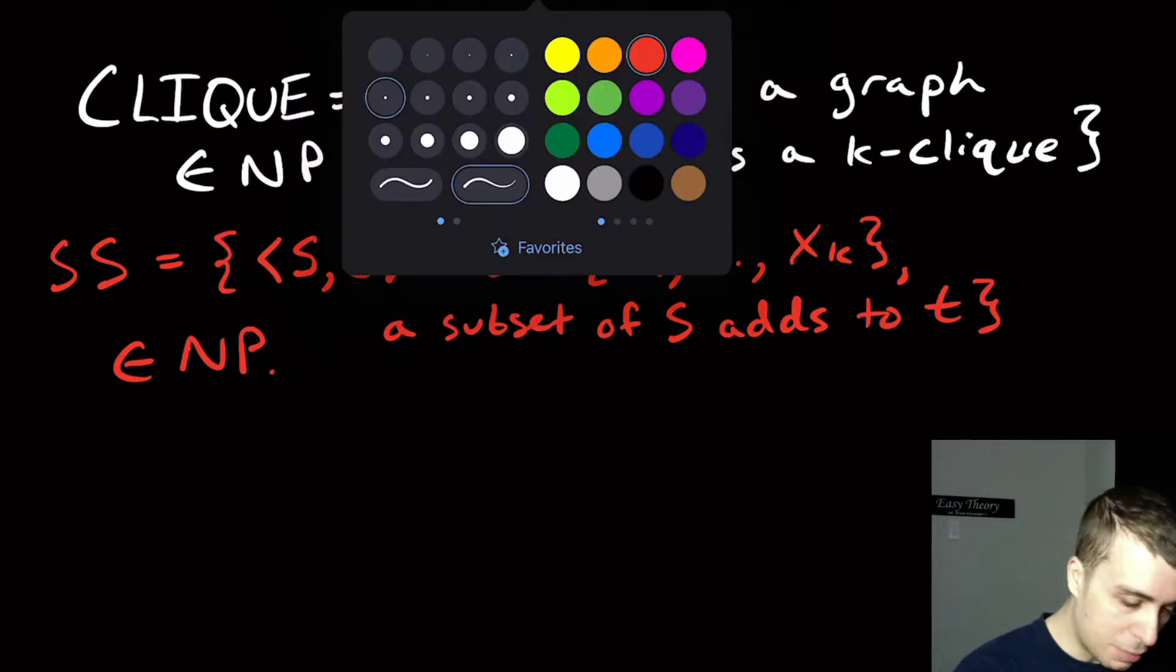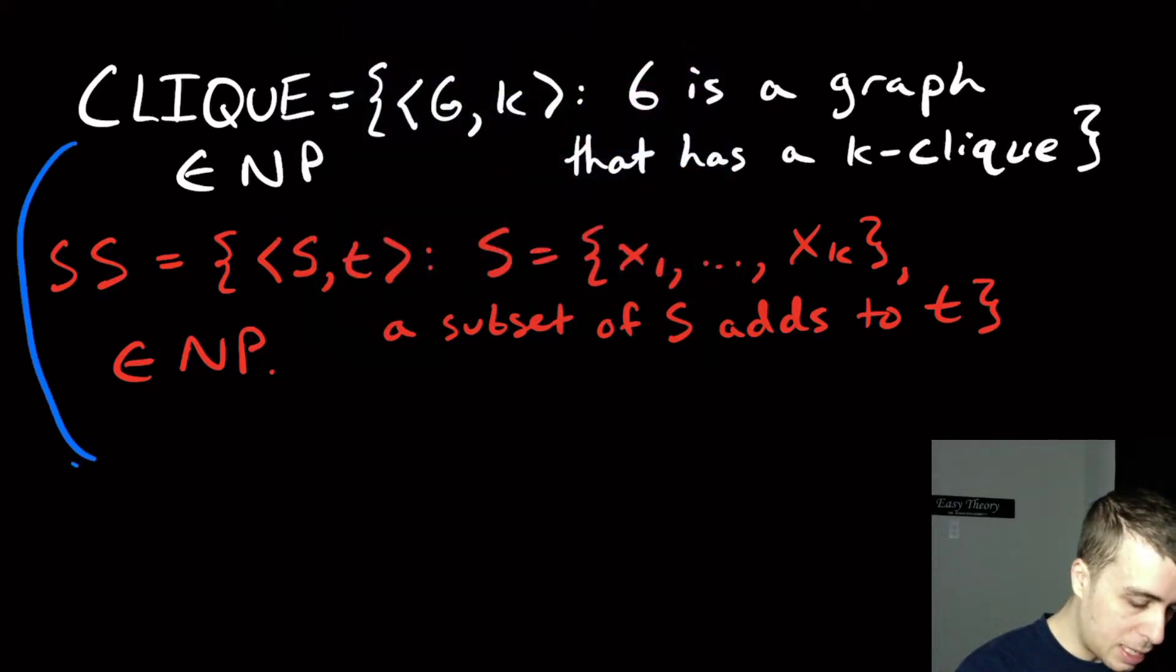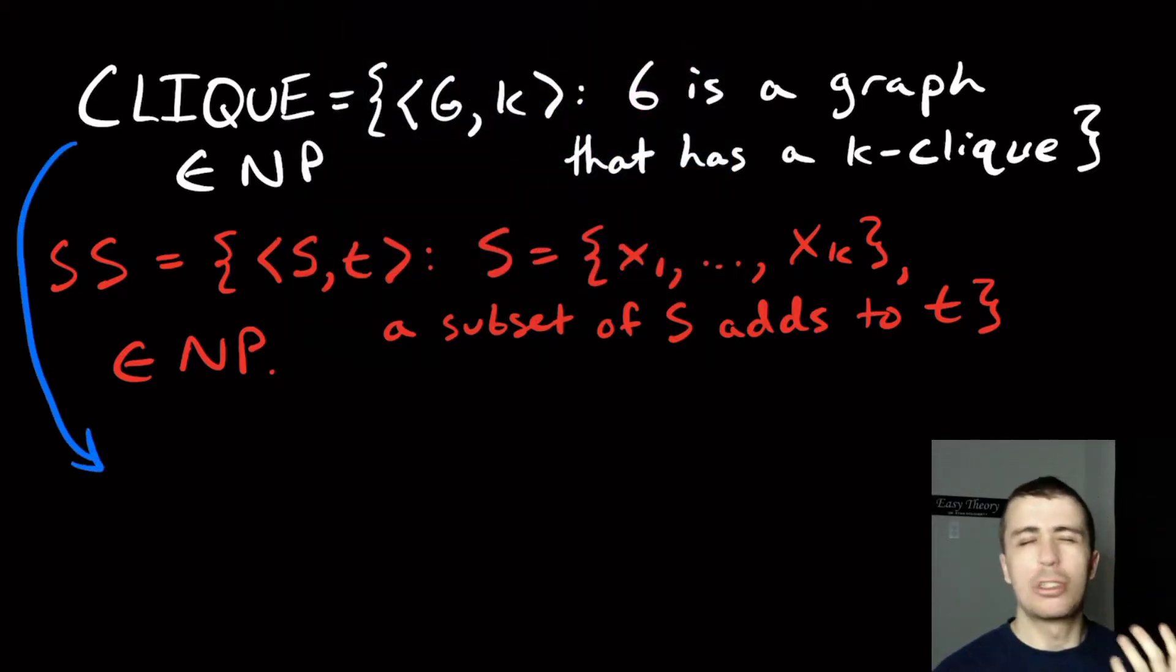So let's do CLIQUE first. So for CLIQUE, it turns out that usually when you want to show that something is in NP, you want to do the certificate because it's just a lot easier to think about once you start doing these.